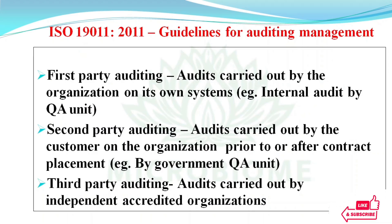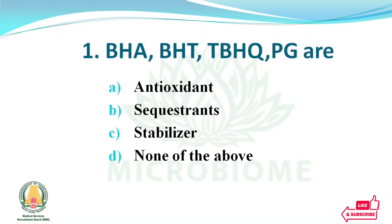First party auditing: audits carried out by the organization on its own systems — internal audit. Second party auditing: audits carried out by the customer on the organization. Third party auditing: audits carried out by an independent accredited organization — that is external.